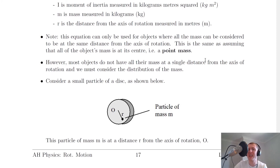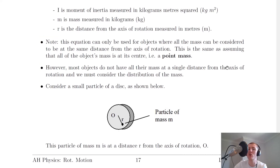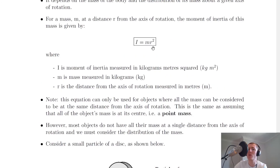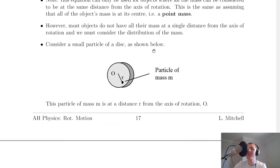Now this isn't really the case for a lot of objects, but we're going to see later on that we've got different expressions for different shapes. This is the case for a point mass — if we're considering a single point mass where all of its mass can be considered to be at the centre of the object, then we can use I equals mr squared, which is the simplest form of this equation.